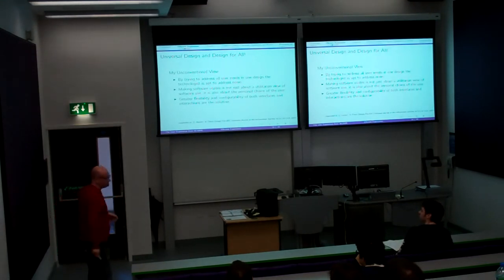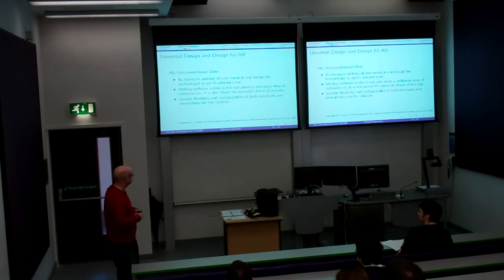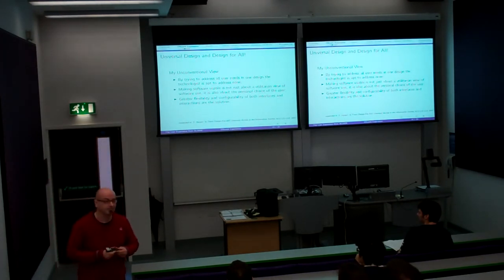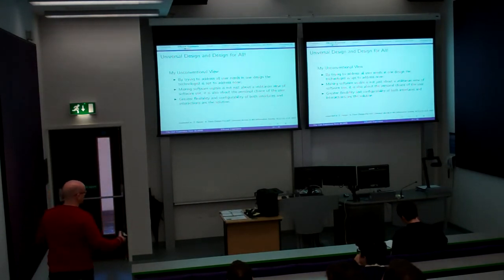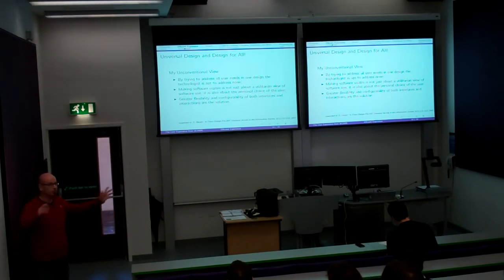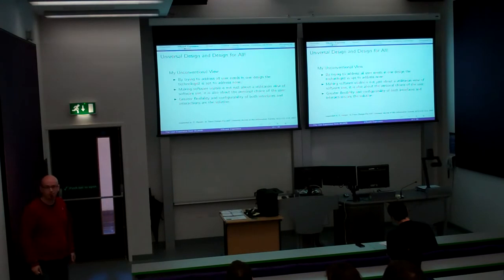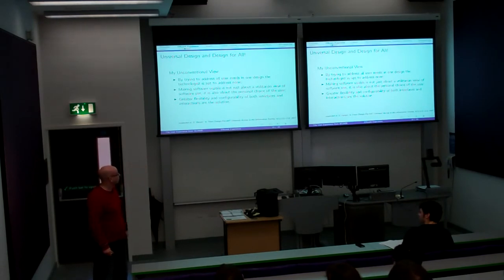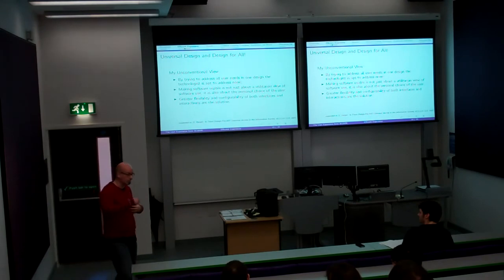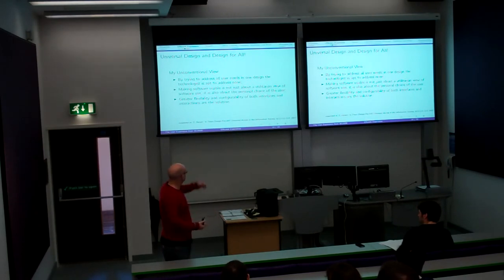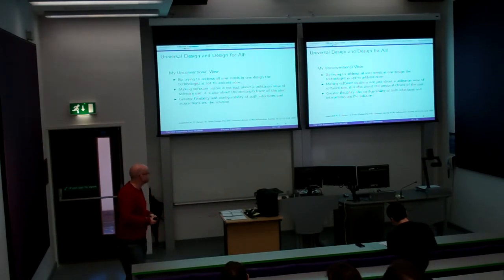So my unconventional view on this, and I've written a few papers on the bottom about this. Is there a design for all? No, it's a design for all. Because you've got that openness, that customisability in there. So, I've tried to address all the user needs, we're apt to address none of them. The granularity is too big, in my opinion. It's not just about utilitarian view of the software, but it's about the personal choices of the users. So I don't know what personal choices of the users are going to be if I'm going to build this software. It's not just so utilitarian as that. Great flexibility and configurability of both interfaces and interactions are the solution, in my opinion.